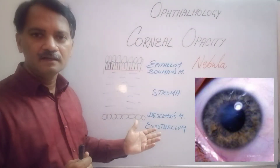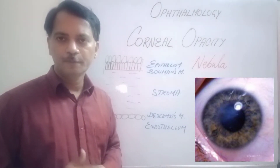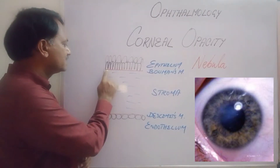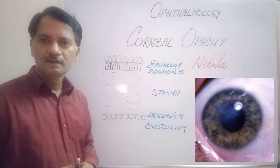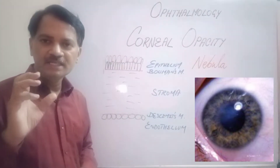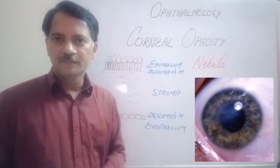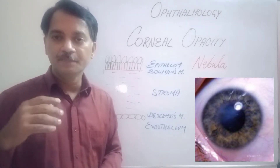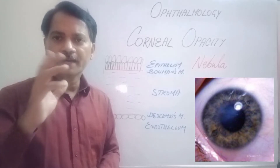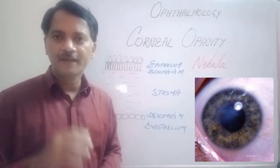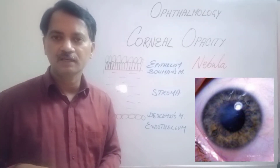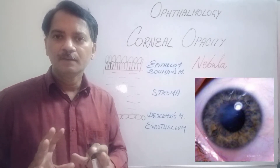In the nebula type of corneal opacity, the opacity is very faint. The layers affected are Bowman's membrane and a small adjacent portion of the stroma. Because only a thin portion of the cornea is affected, the opacity is also very thin. When you shine a light through it, the deeper structures are still visible in detail. This opacity causes blurred vision and glare, and the patient may have watering on looking at bright light, but no pain.